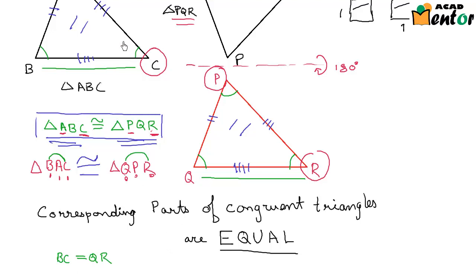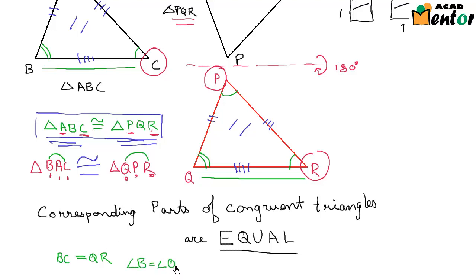What about the angles? Angle B and angle Q are corresponding angles of congruent triangles. So can I say that angle B will be equal to angle Q?